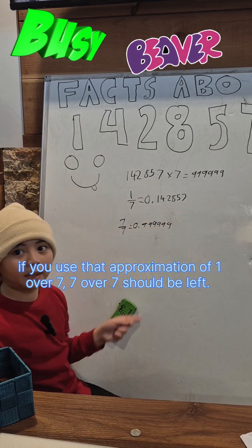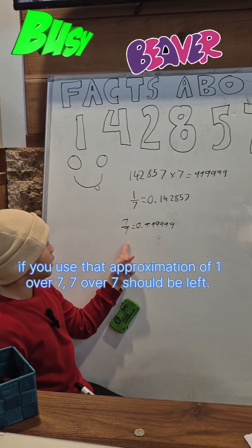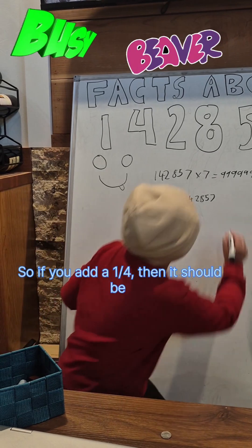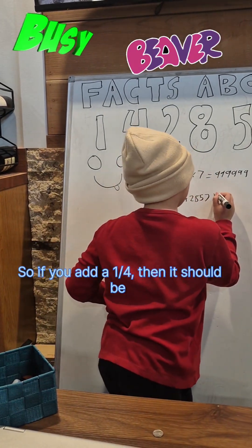you use that approximation of 1 over 7. Seven over 7 should be that, so if you add a 1